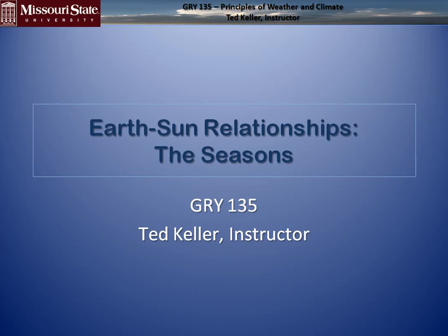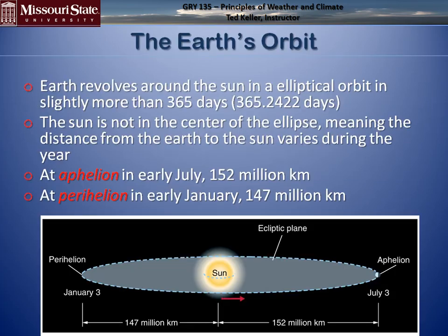Here's my video lecture on why we have seasons, Earth-Sun relationships as it's otherwise known. Let's start with the Earth's orbit around the Sun — it's an ellipse.